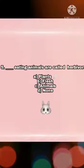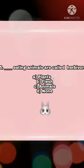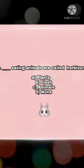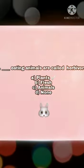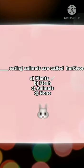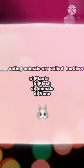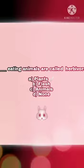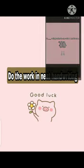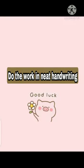Question five: Dash-eating animals are called herbivores — plants, flesh, animals, or none? The correct answer is plants. Okay students, do these MCQs in your science notebooks in neat handwriting.